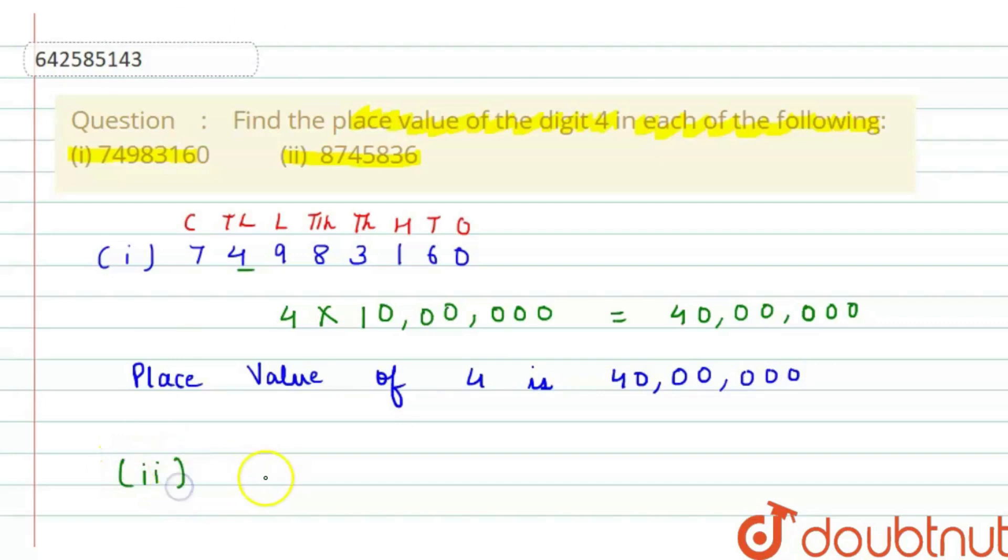Now let's proceed with the second part of the question which is 8745836. So I'm again writing its place values that is 1, 10, 100, 1000, 10000, lakh, 10 lakh.